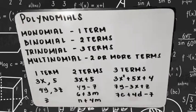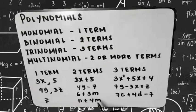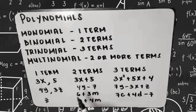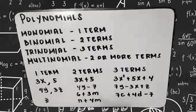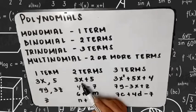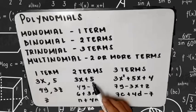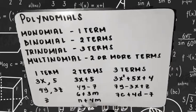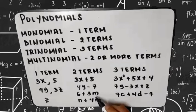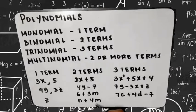For 2 terms, examples are: 3x plus 5, 4y minus 7, 6 plus 3m, and n plus 4m. As you can see, we have two terms in each. The terms are the expressions separated by addition and subtraction signs. For example, 3x and positive 5; 4y and negative 7; 6 and positive 3m; n and positive 4m. That's how we identify the number of terms.